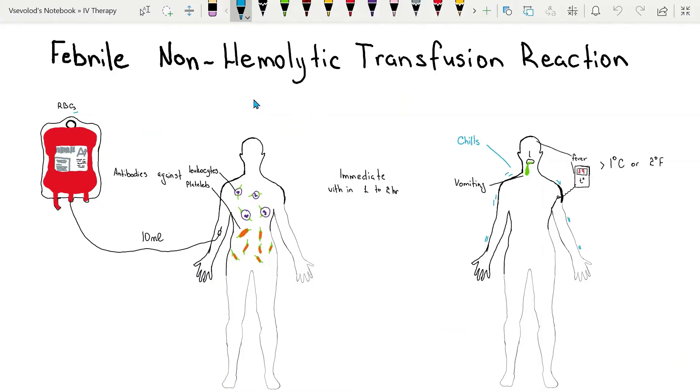Hello, in this video we're going to talk about febrile non-hemolytic transfusion reaction. The febrile non-hemolytic transfusion reaction is manifested by a rise in temperature of one degree Celsius or two degrees Fahrenheit or more occurring in association with transfusion and not having any other explanation.